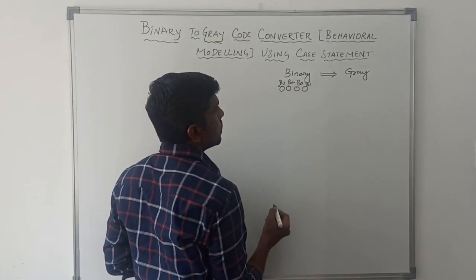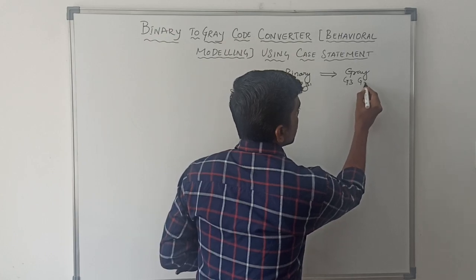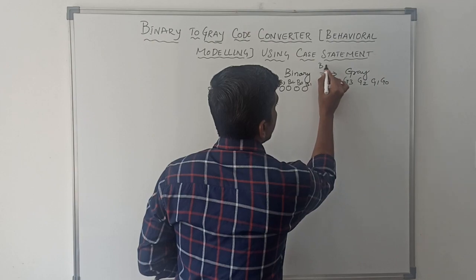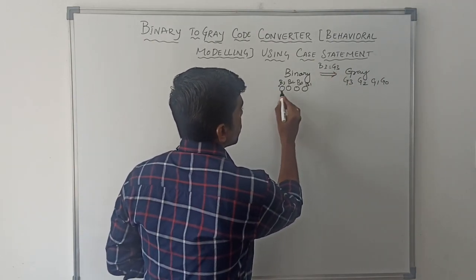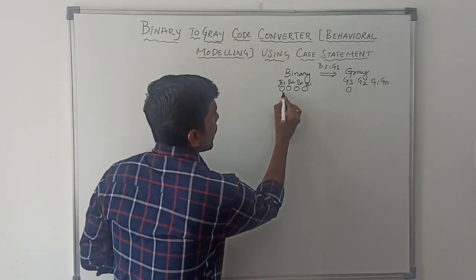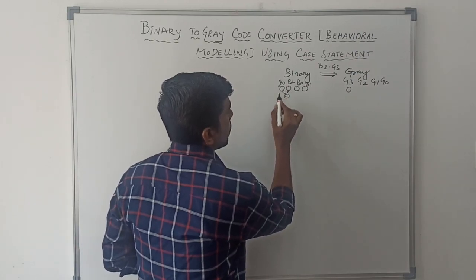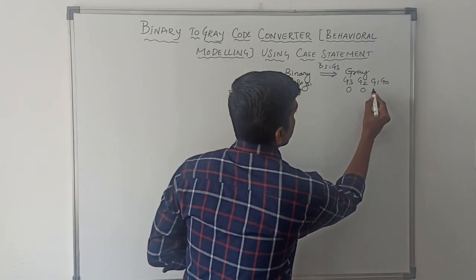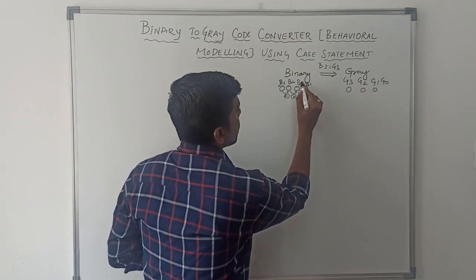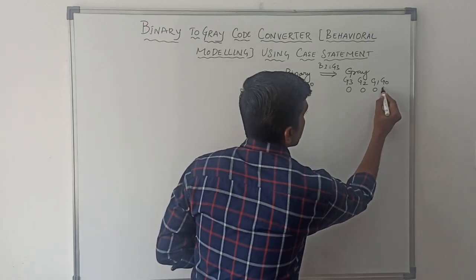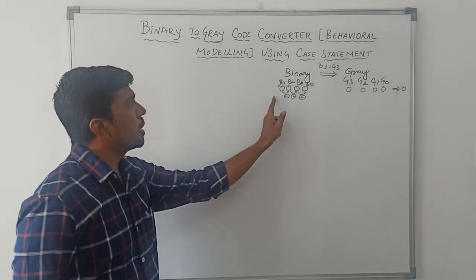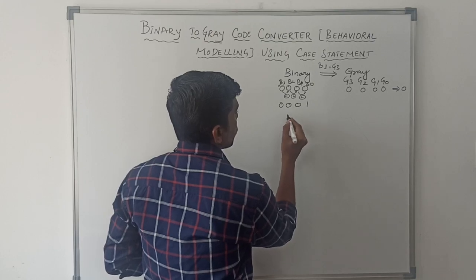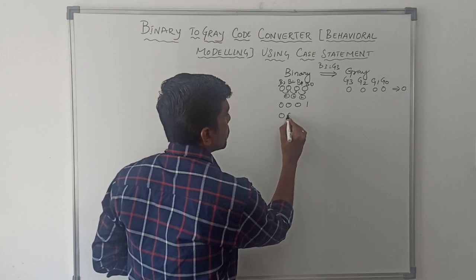The procedure to convert binary number into gray number: B3 value is equal to G3. Here G represents gray and B represents binary. So B3 equals G3. Then B3 XOR B2 gives G2, B2 XOR B1 gives G1, and B1 XOR B0 gives G0. Let me first write all the combinations of binary numbers, then afterwards we convert the binary number into gray number.